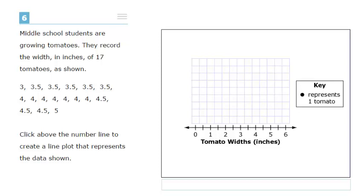Item 6 on the math test says middle school students are growing tomatoes. They record the width in inches of 17 tomatoes as shown. Click above the number line to create a line plot that represents the data shown.